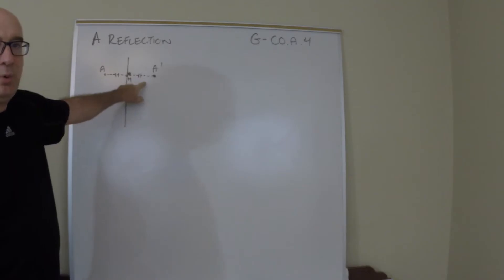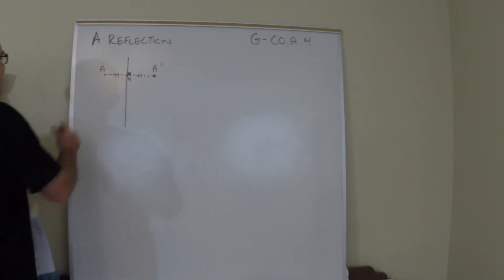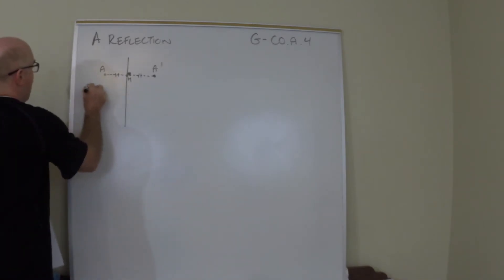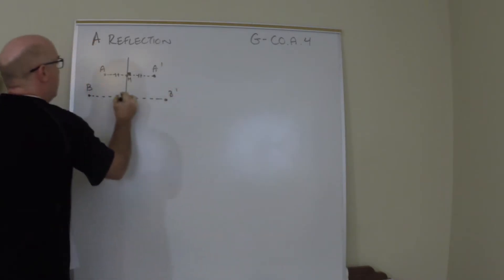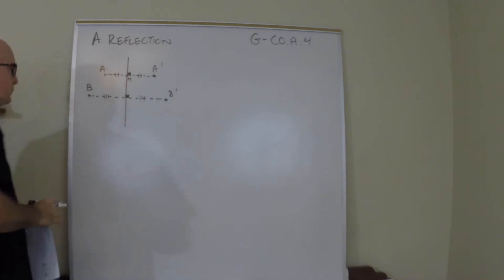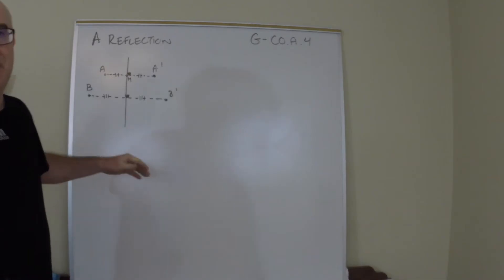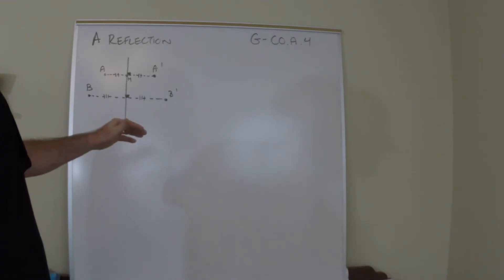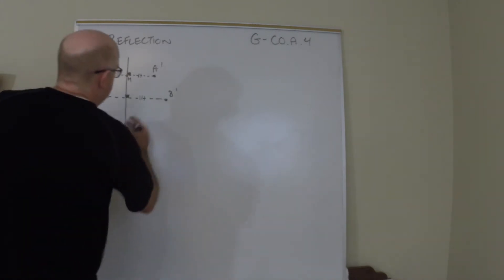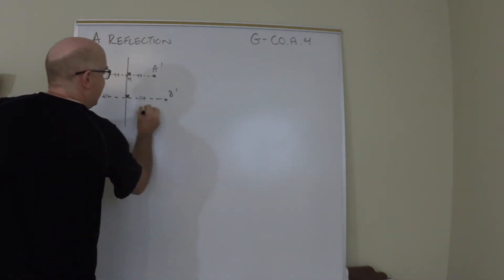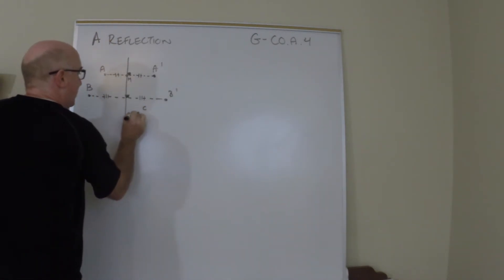A point out here B would map to B prime out here, equidistant. Now notice something that's happening - everybody would move perpendicularly, they'd all move in a parallel direction. For instance, if this point C was on this side, it would go this direction, again perpendicular but equal in distance.